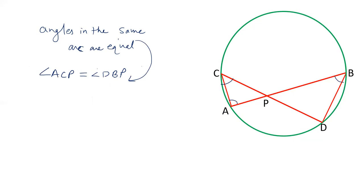And similarly, angle CAB is equals to angle BDC. Same property, angles in the same arc.